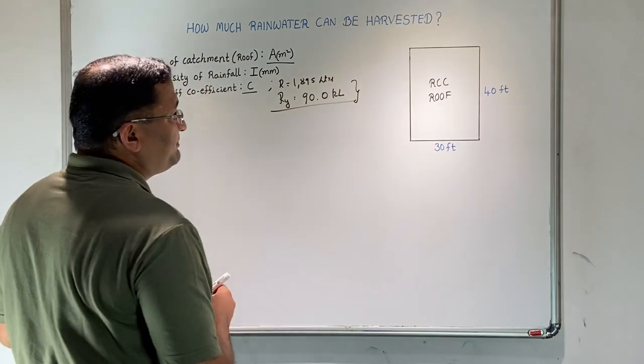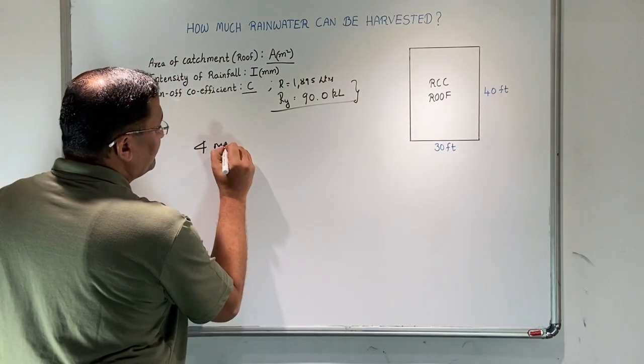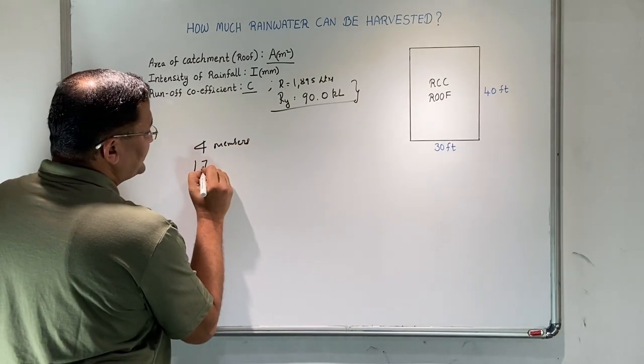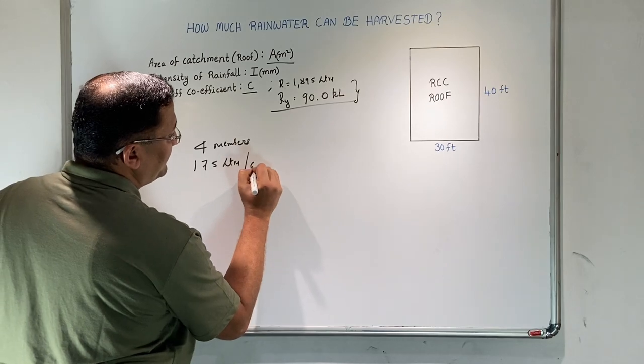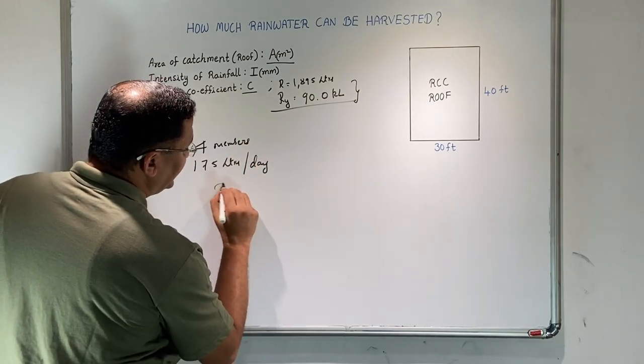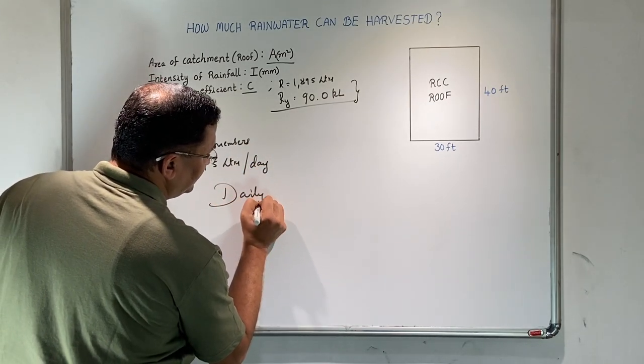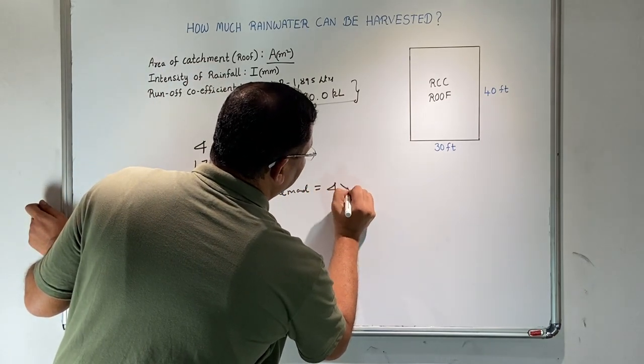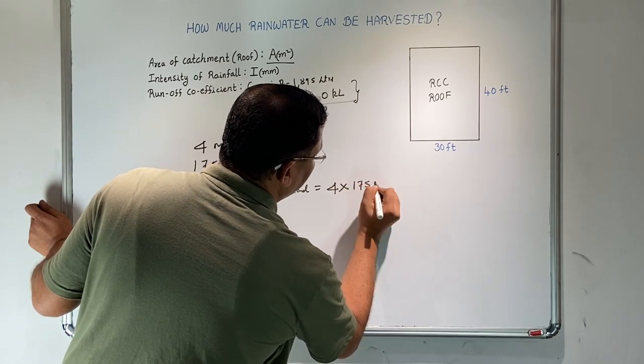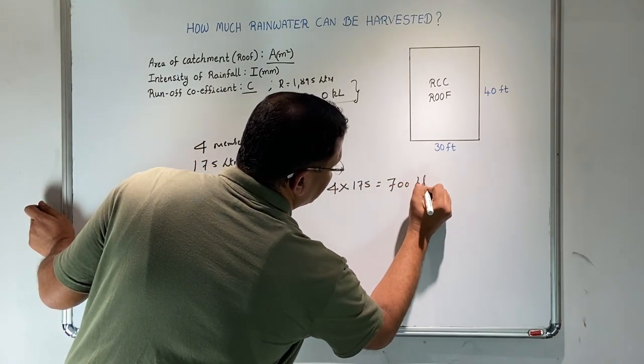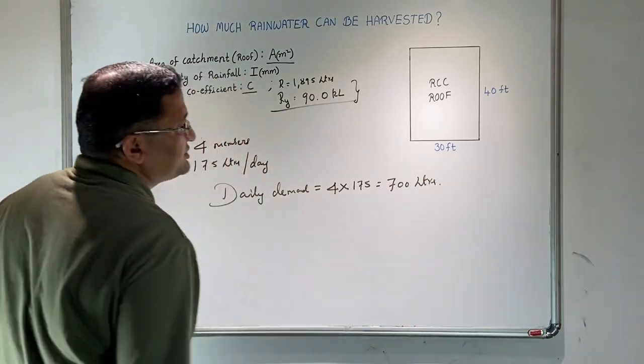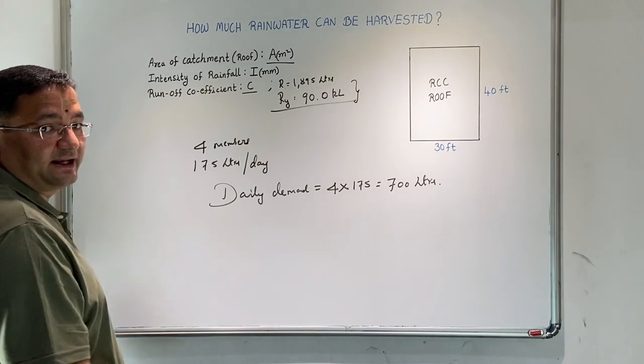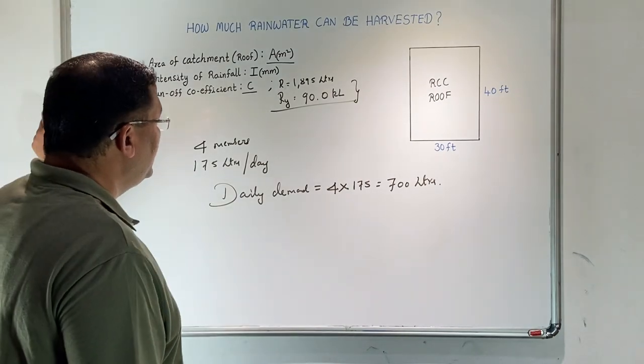Let us say in this particular house, we have four members. Each of them consumes 175 liters of water per day. Daily demand of water equals 4 times 175, that becomes 700 liters. This is daily demand or daily consumption.